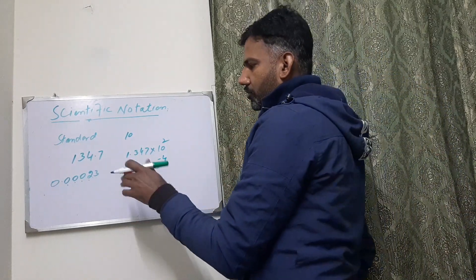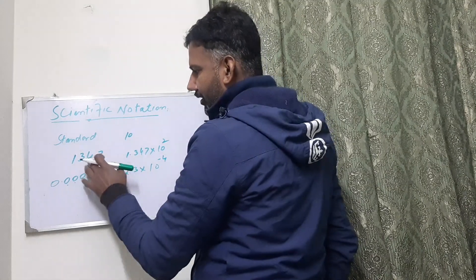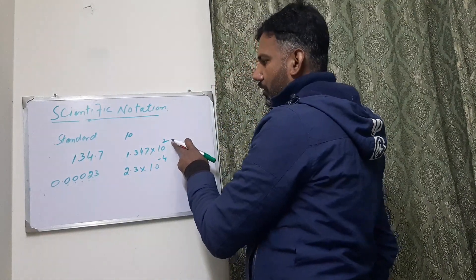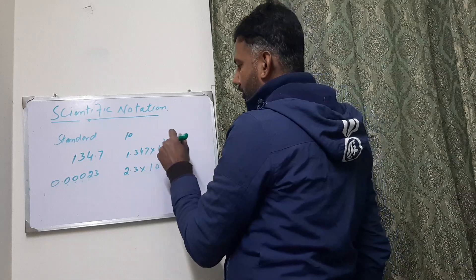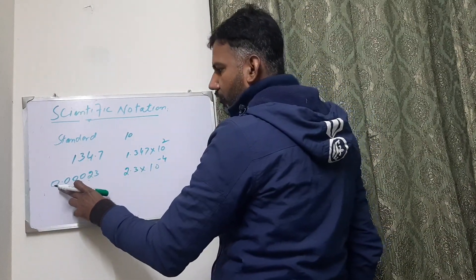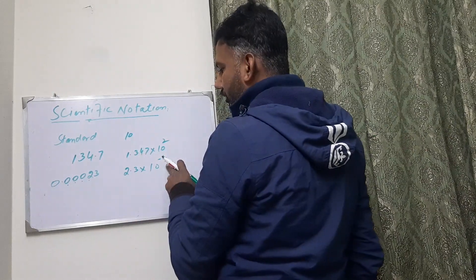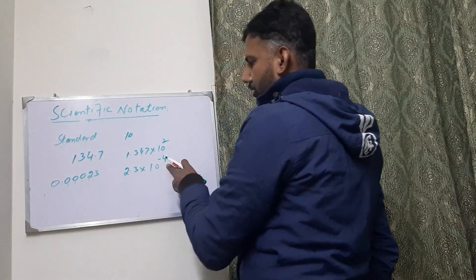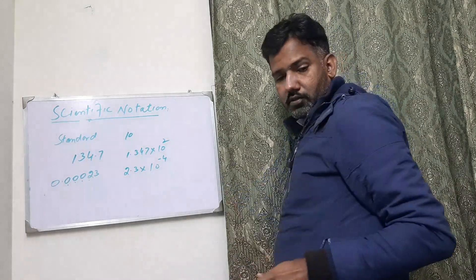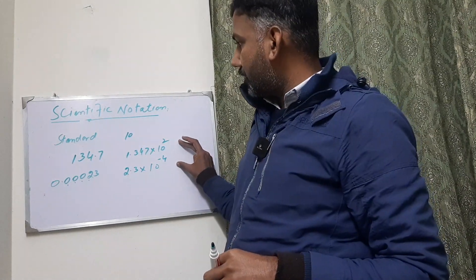One more thing: when we move the decimal from left to right, we raise to a positive power. And when we go from right to left, we write the power with a negative sign.